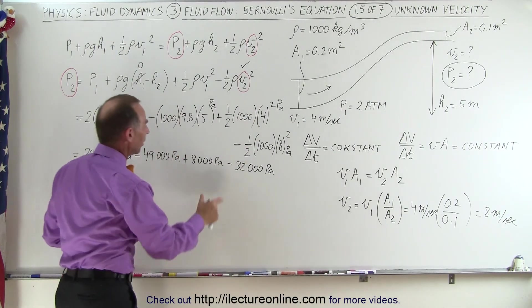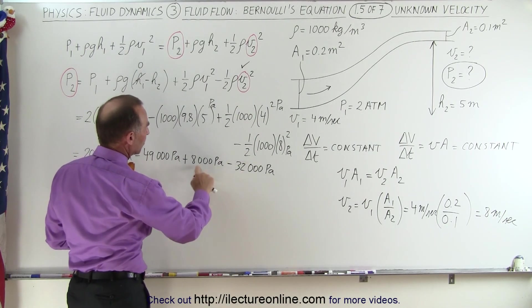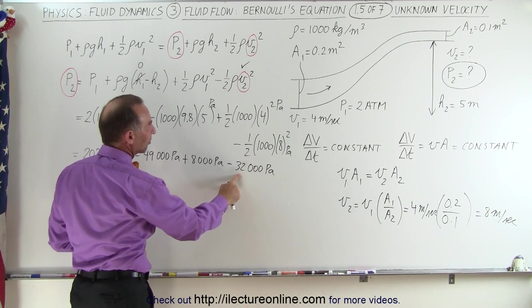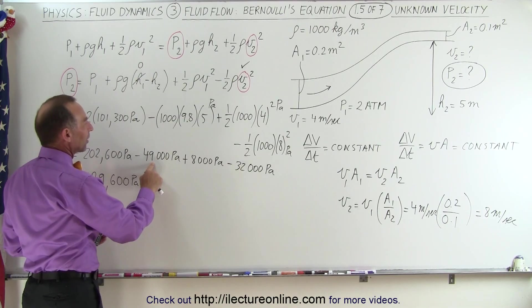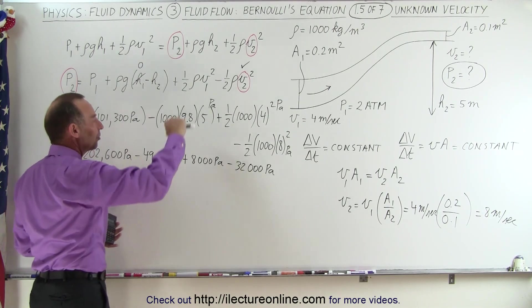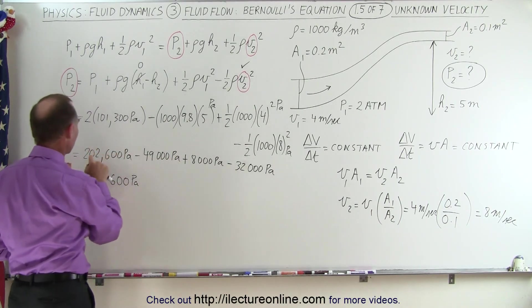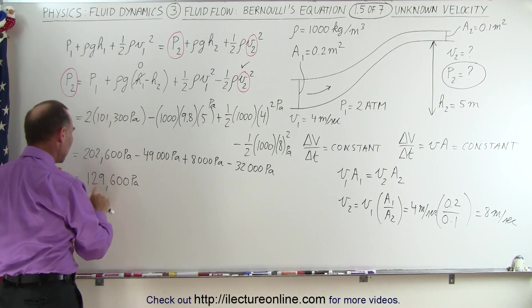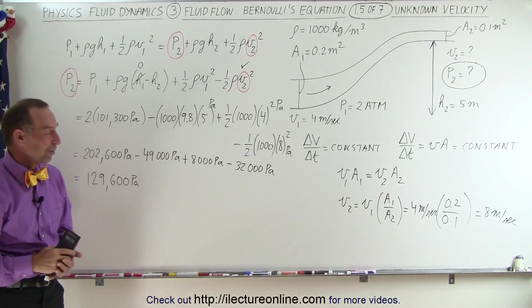For two reasons: for one, the pressure decreased because it gained elevation so the pressure drops, and secondly the velocity increased, which is another reason why the pressure dropped. So the pressure dropped due to the velocity would be 32 minus 8 or 24,000 pascal drop because of the increase in velocity, and a 49,000 pascal drop because of the increase in height. So subtract 24,000 and subtract 49,000 from 202,600 and that will now be the new pressure at 0.2, and that's how it's done.